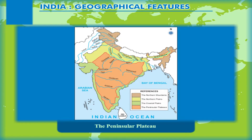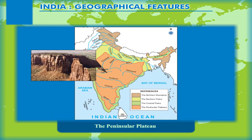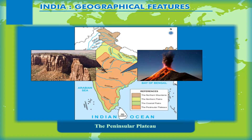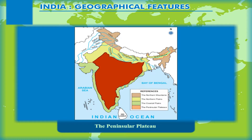The peninsular plateau is the oldest physiographic division of India, made up of rocks of volcanic origin. It almost entirely covers the Indian peninsula. This triangle-shaped raised stable land has its base towards the north along the northern plains, tapering southwards with its apex at Kanyakumari.